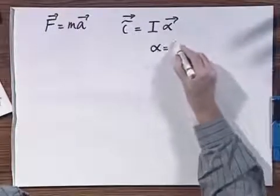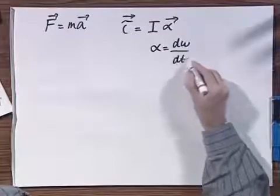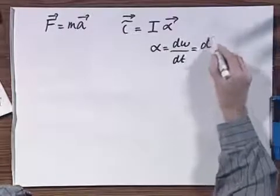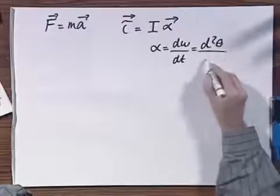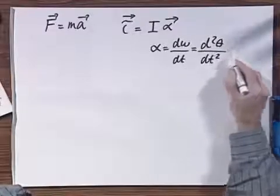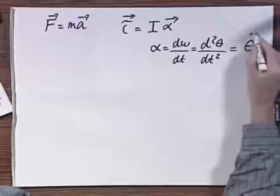Alpha is omega dt, and omega is theta dt squared, and for which I will write often theta dot.